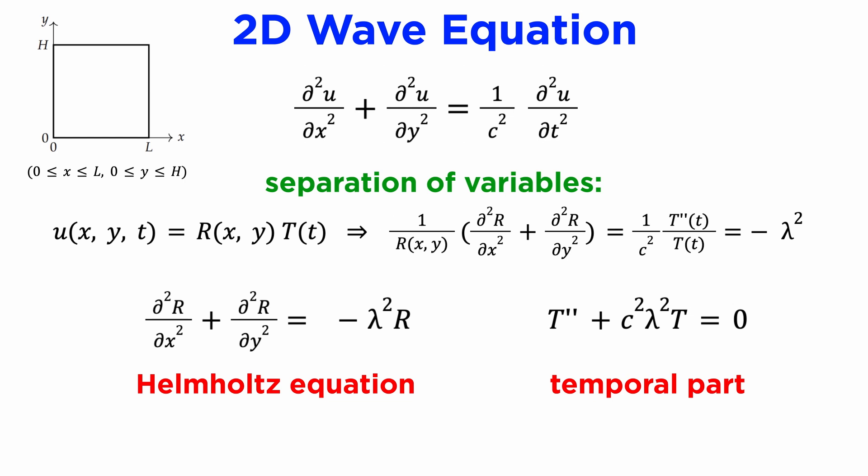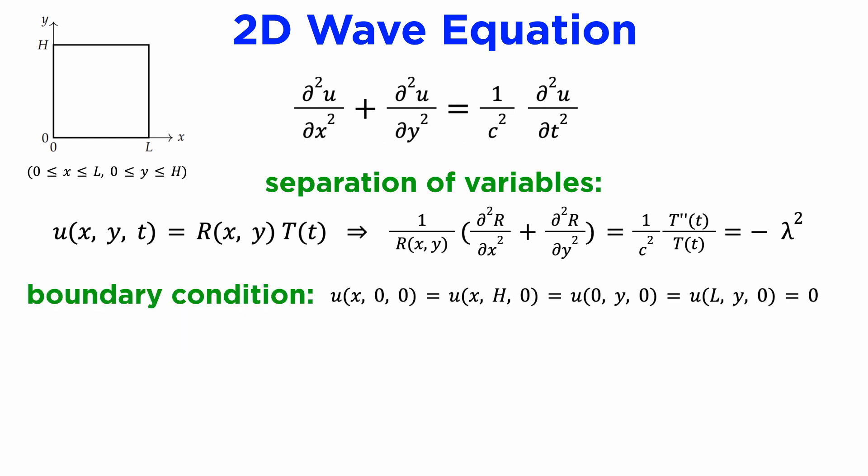You might recognize our spatial equation is actually the Helmholtz equation, which we briefly mentioned in the tutorial on Laplace's equation. When we solve each of these with the conditions of the displacement u being zero on the boundary of a rectangle of width l and height h, we get the following product.